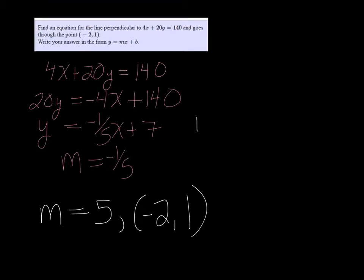So with the line equation, I'm going to do y minus y1, which is 1, equals 5 times x minus x1, which is negative 2.